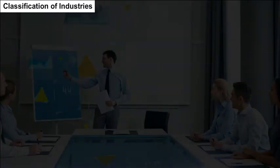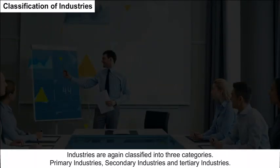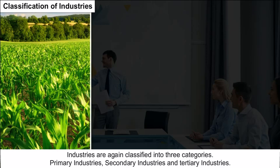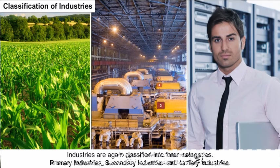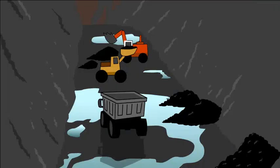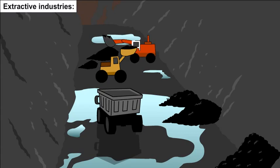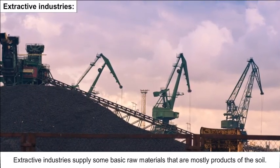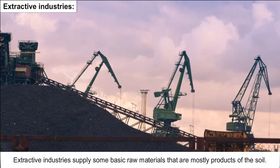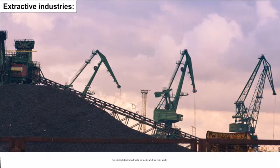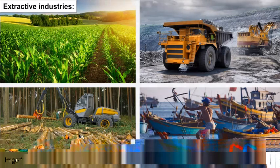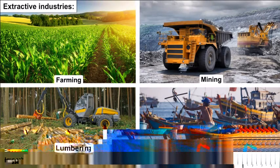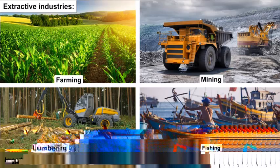Classification of industries: industries are classified into three categories — primary, secondary and tertiary industries. Extractive industries extract or draw out products from natural sources. They supply some basic raw materials that are mostly products of the soil. Important extractive industries include farming, mining, lumbering, hunting and fishing operations.